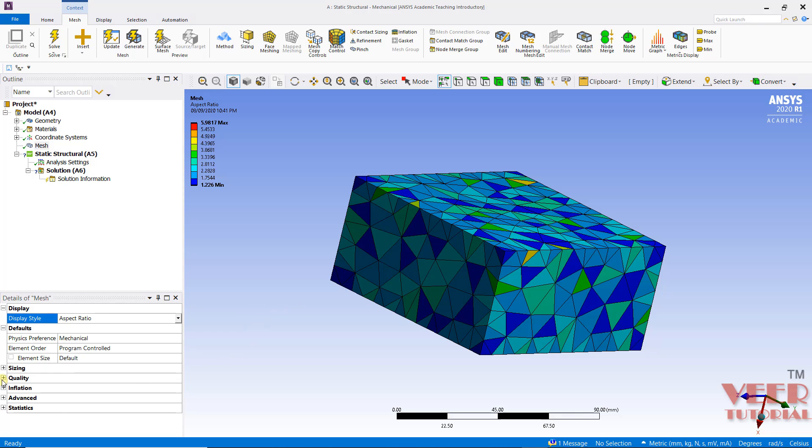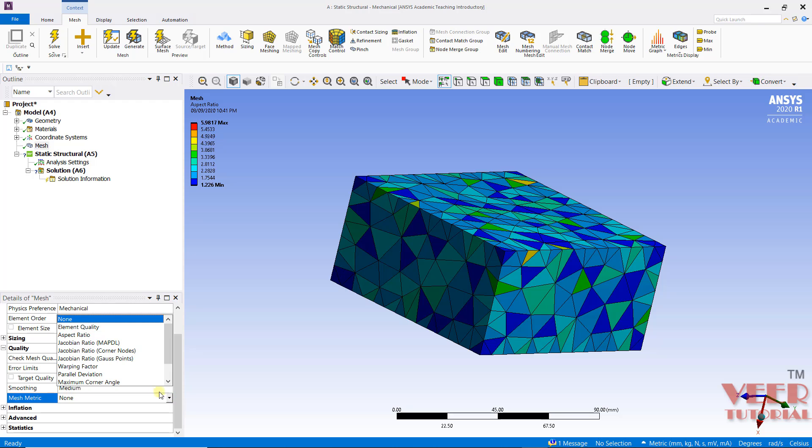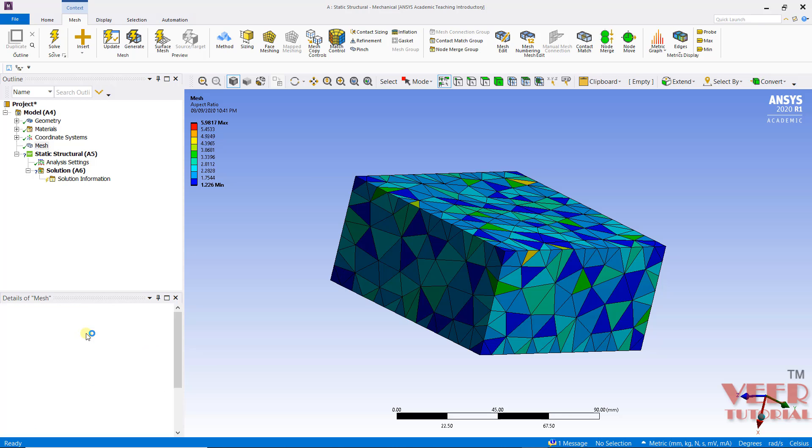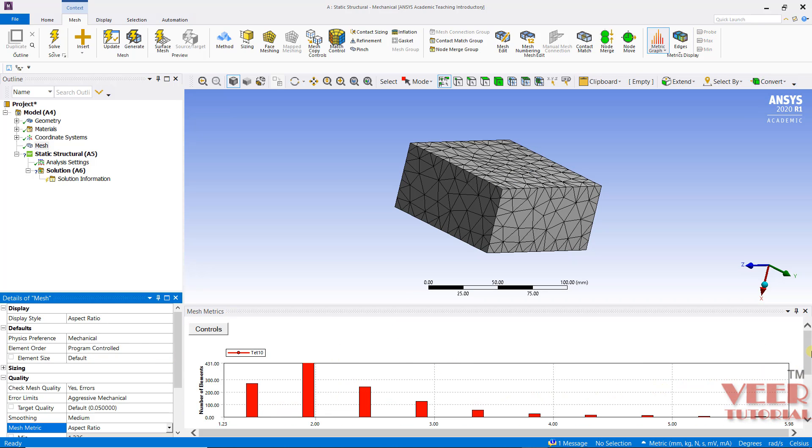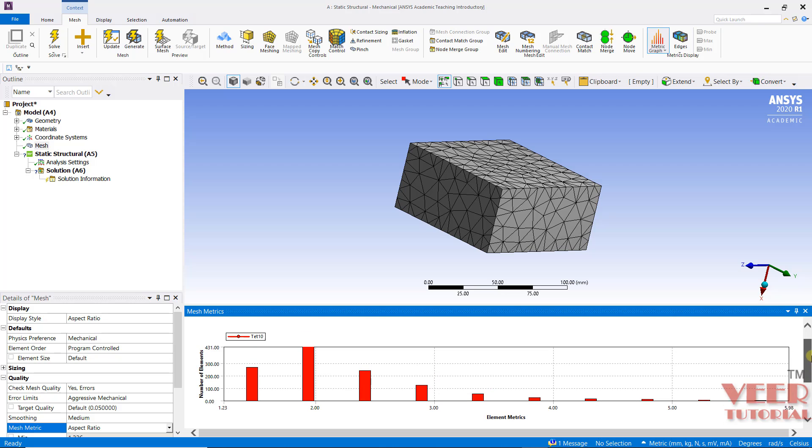If I go to this quality and here we can see mesh metric. Right now it is none. So if I click on this and then click on this arrow and let's say I want to select this with respect to aspect ratio. So here we can see a chart will open. Now inside this chart, on the horizontal side, we have element matrix,